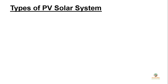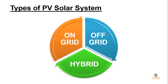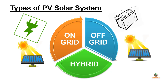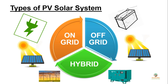Before that, you should know the various types of PV solar systems. We have the on-grid solar system, which is a grid-connected solar system. Then we have the off-grid solar system, which includes batteries for electrical storage. Then we have a hybrid PV solar system — a mixture of both on-grid and off-grid with some additional sources like diesel generator, wind energy, etc.